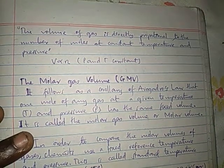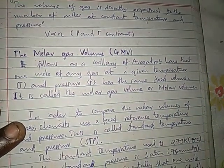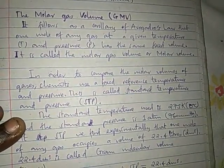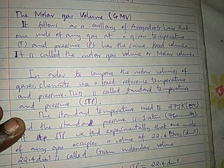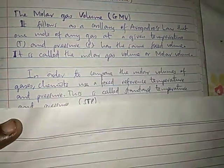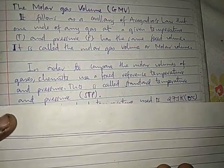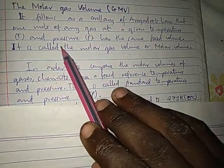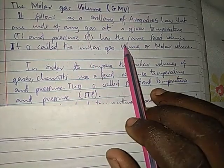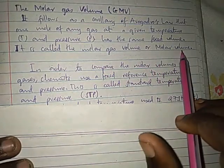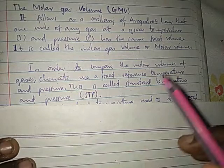Now from there, let's move to the idea of the molar gas volume — the molar gas constant GMV. So let's see what the molar gas constant GMV is. It follows as a corollary of Avogadro's Law that one mole of any gas at a given temperature T and pressure P has the same fixed volume, so it is called the molar gas volume.